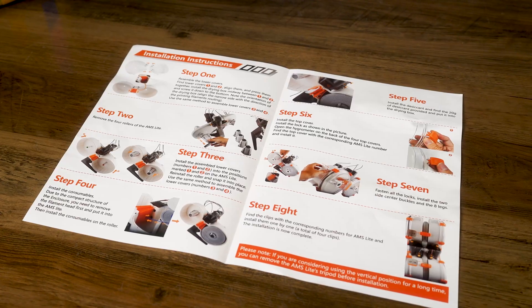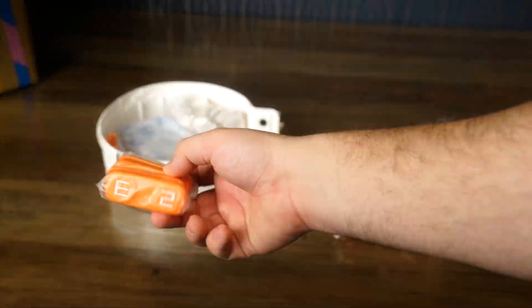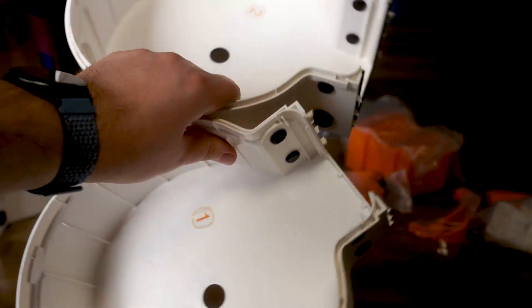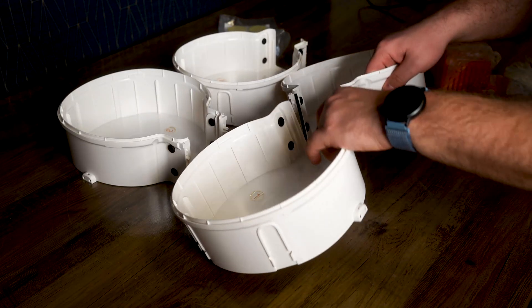Note the affiliate link is down in the description. We'll begin by removing the contents of this box. Take out the bottom enclosure covers—they are numbered one to four.